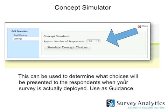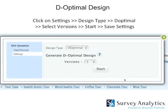The third item is the concept simulator, mainly used as guidance to determine what choices will be presented to the respondent when the survey is deployed. You can see approximately how many times a particular feature attribute will show across 25 different respondents. In the optimal design, you can change the settings, select the design type and version type. The minimum for versions is always five or higher — attempting to go lower will produce an error.